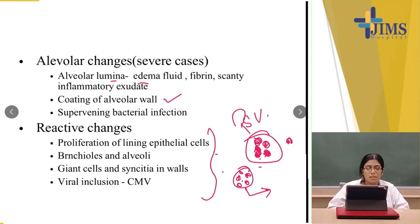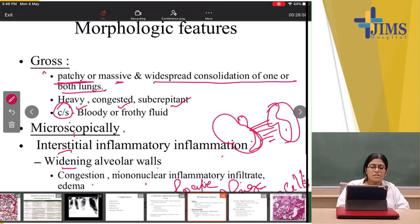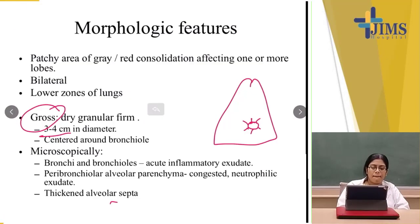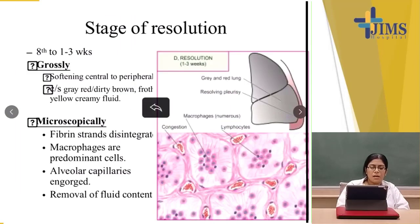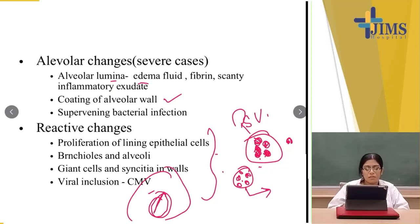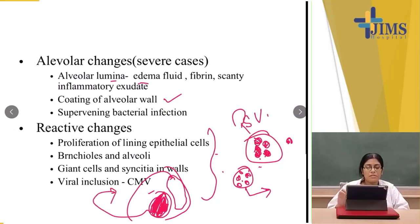In cytomegalovirus (CMV) infection, the nucleus of the infected cell will be large with dense chromatin, showing nuclear inclusion bodies, and may also show cytoplasmic inclusions. This is classical of CMV and happens in immunosuppression.